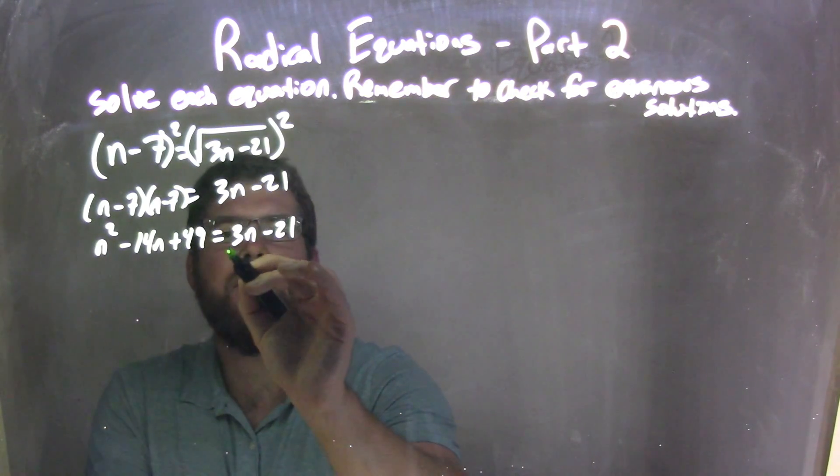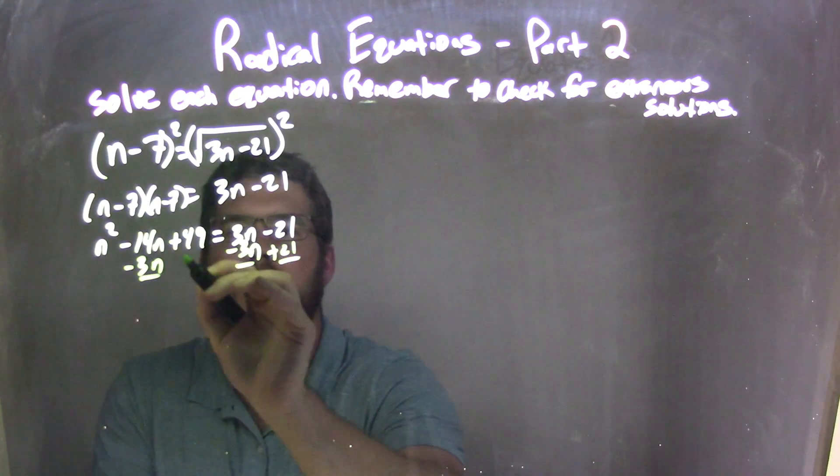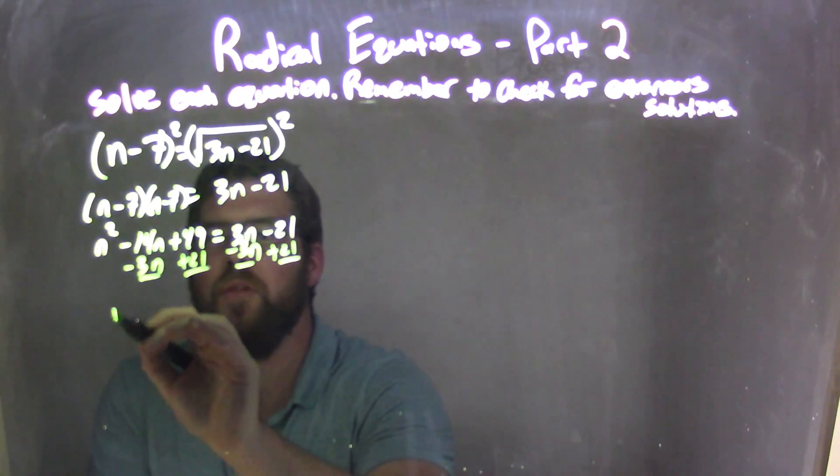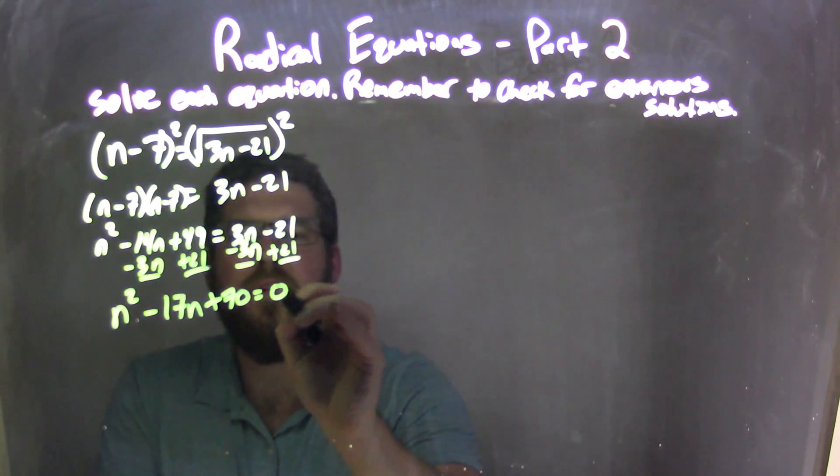Now let's bring these over here, subtract 3n from both sides, add 21 to both sides, leaving me with n squared minus 17n plus 70 equals 0.